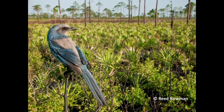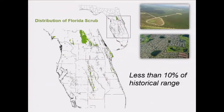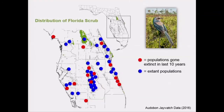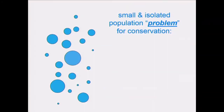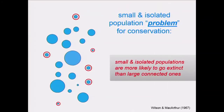Consequences of this for organisms restricted to these small habitat fragments can be really devastating. As an example from a species I'm working on, Florida scrub jays are a federally endangered species — extreme habitat specialists restricted to early successional, fire-maintained oak scrub habitat. Over the past century, this habitat has been reduced to less than 10% of its historical range, causing dramatic statewide population declines, including many documented extinctions shown here by the red dots.